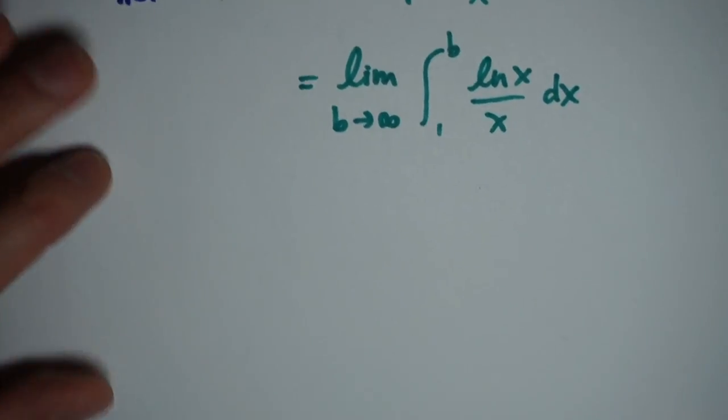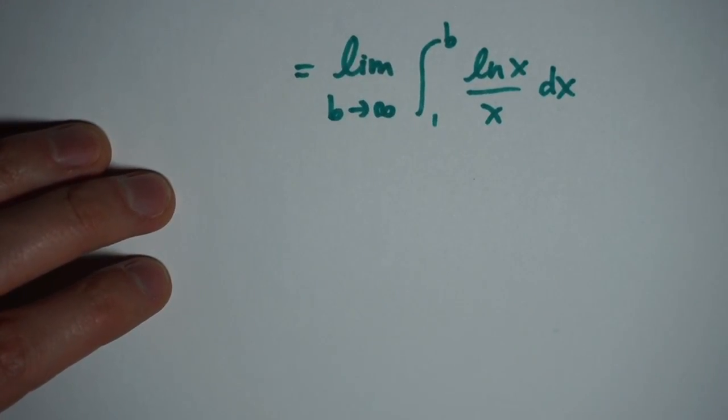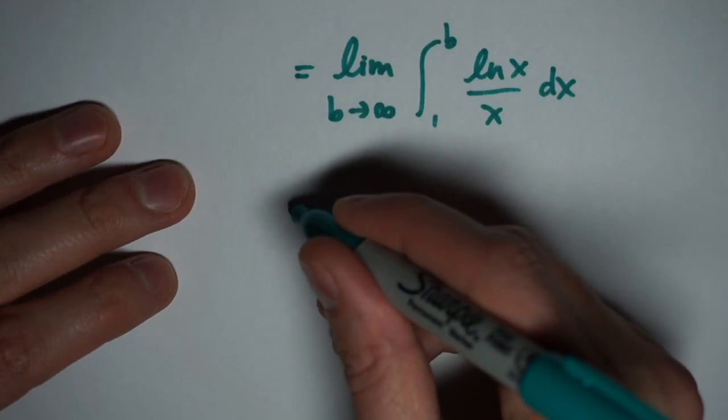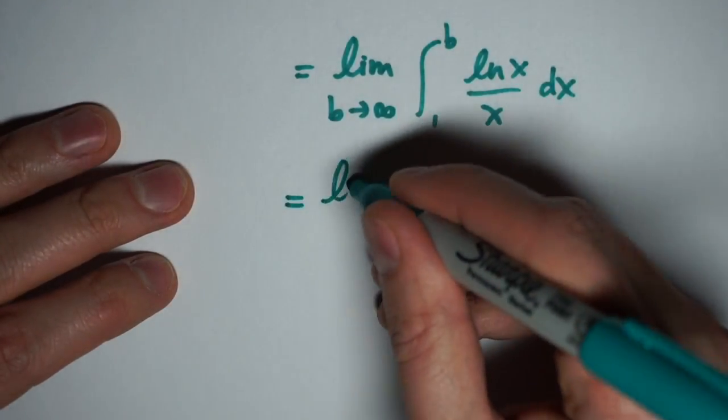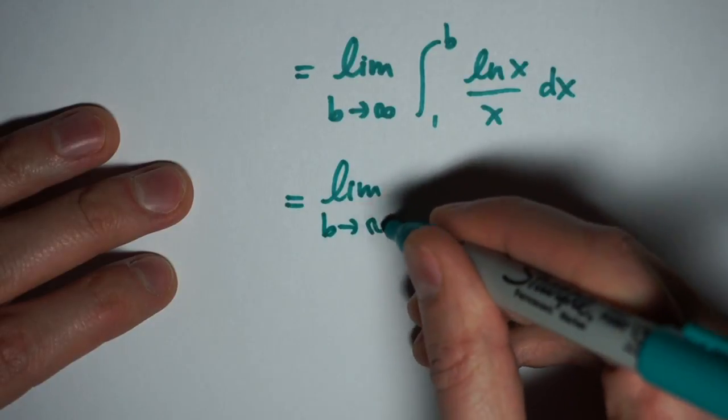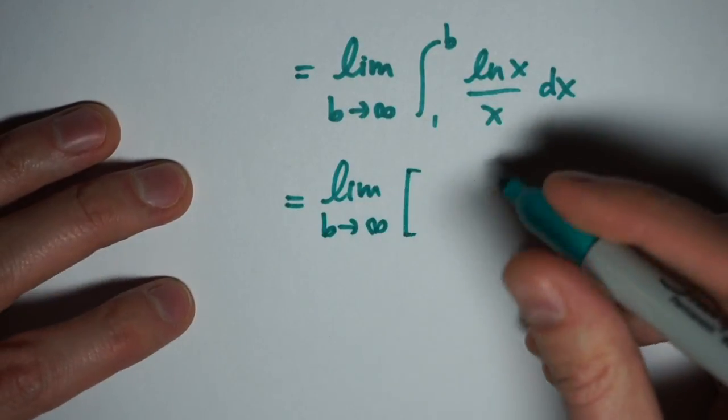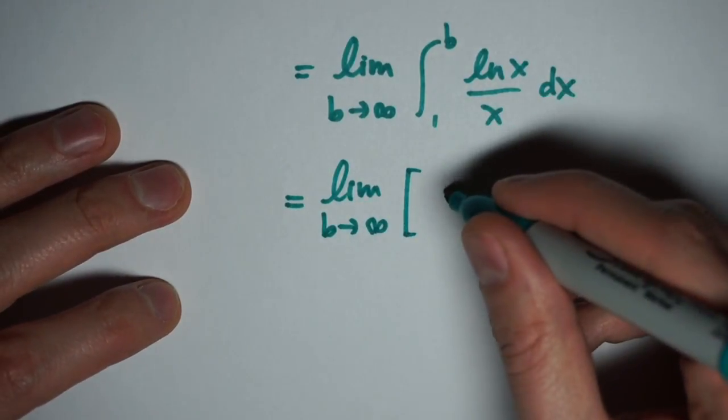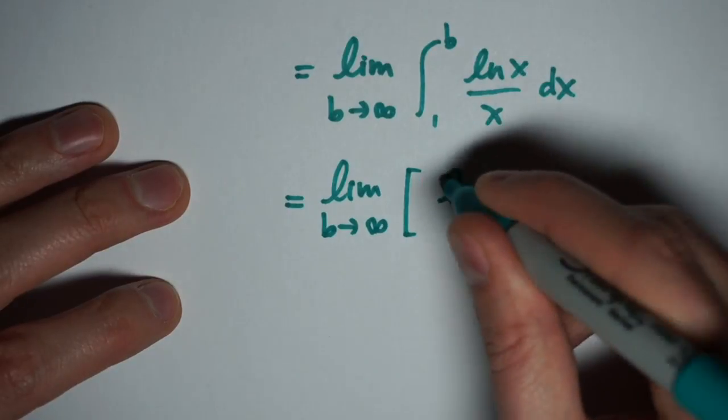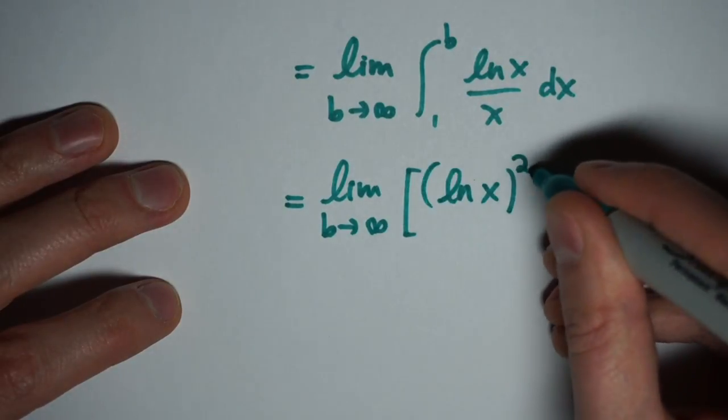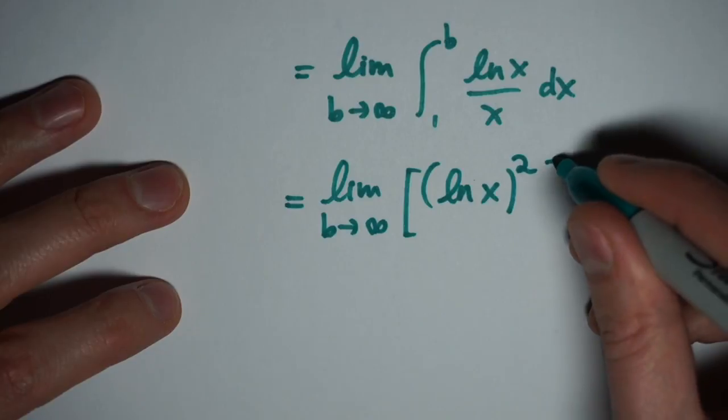Now inside the limit, this is a definite integral, and it's a definite integral that we know how to do. In particular, this is going to be a substitution problem that we can work with. So I have the limit as b goes to infinity. If you do the substitution, what you end up with is u is equal to the natural log of x, which means du is the 1 over x dx that's left in the problem.